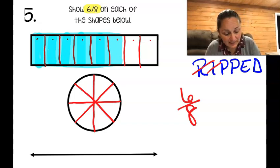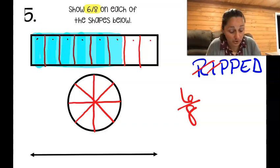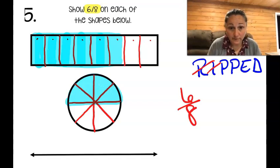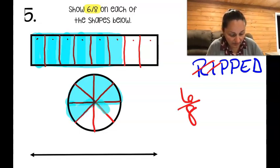Now I need to shade six of these eight pieces. The top half is already four, so let's go around the circle: that's four, and I need two more — four, five, and six on the other side. Looks pretty good.